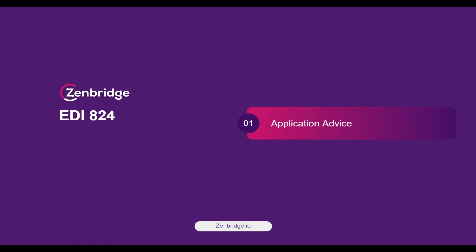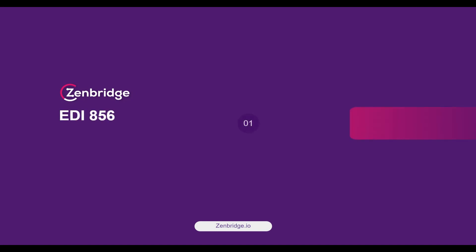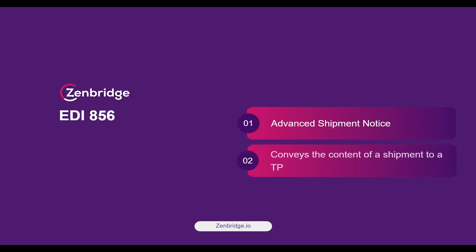EDI 824 is an application advice. It is used by a trading partner to communicate with other trading partners if a transaction is accepted or rejected. EDI 856 is called an advanced shipment notice, which conveys the content of a shipment to a trading partner.